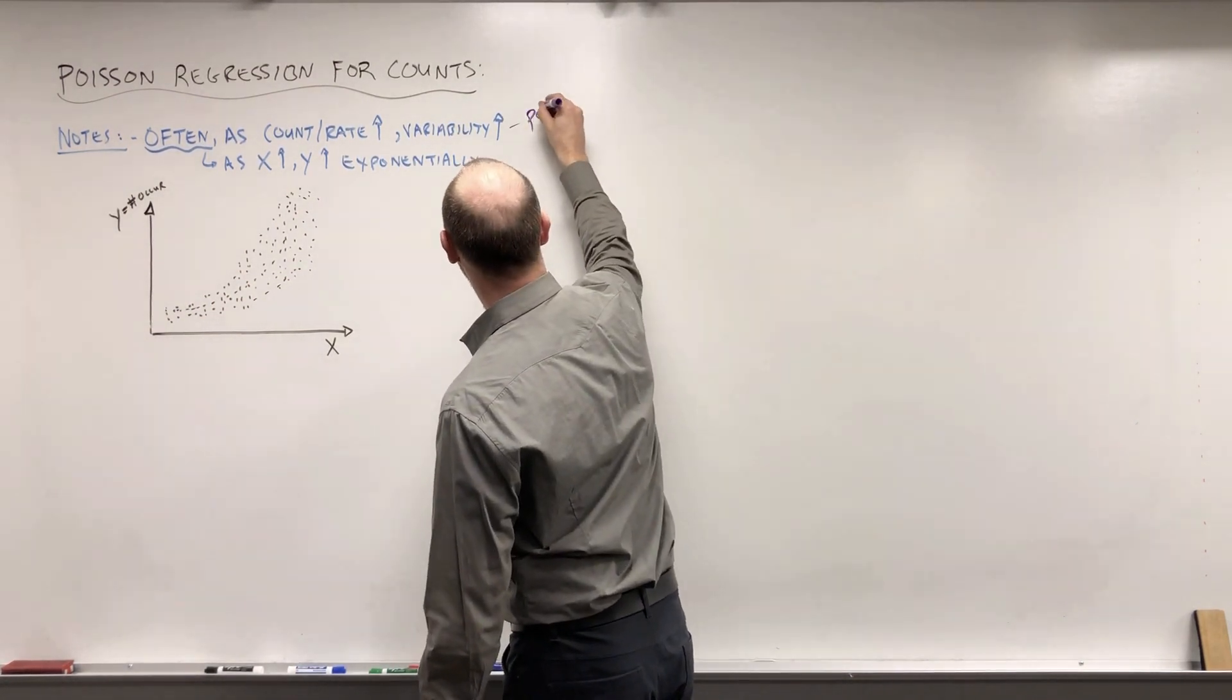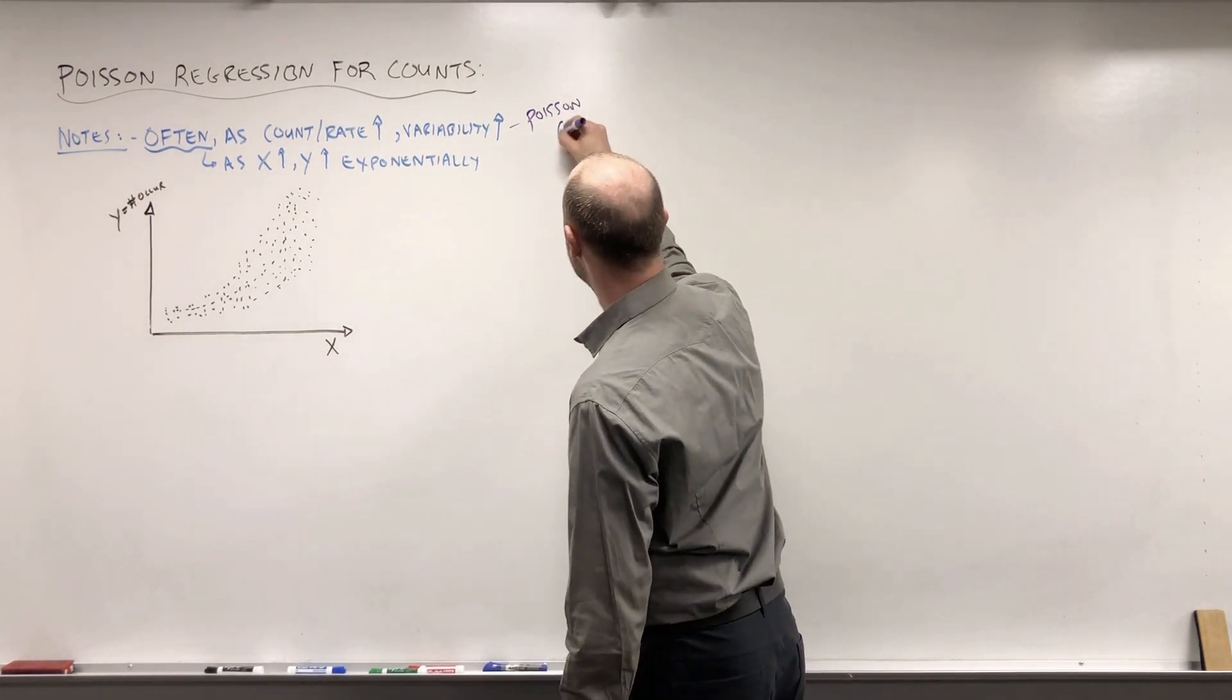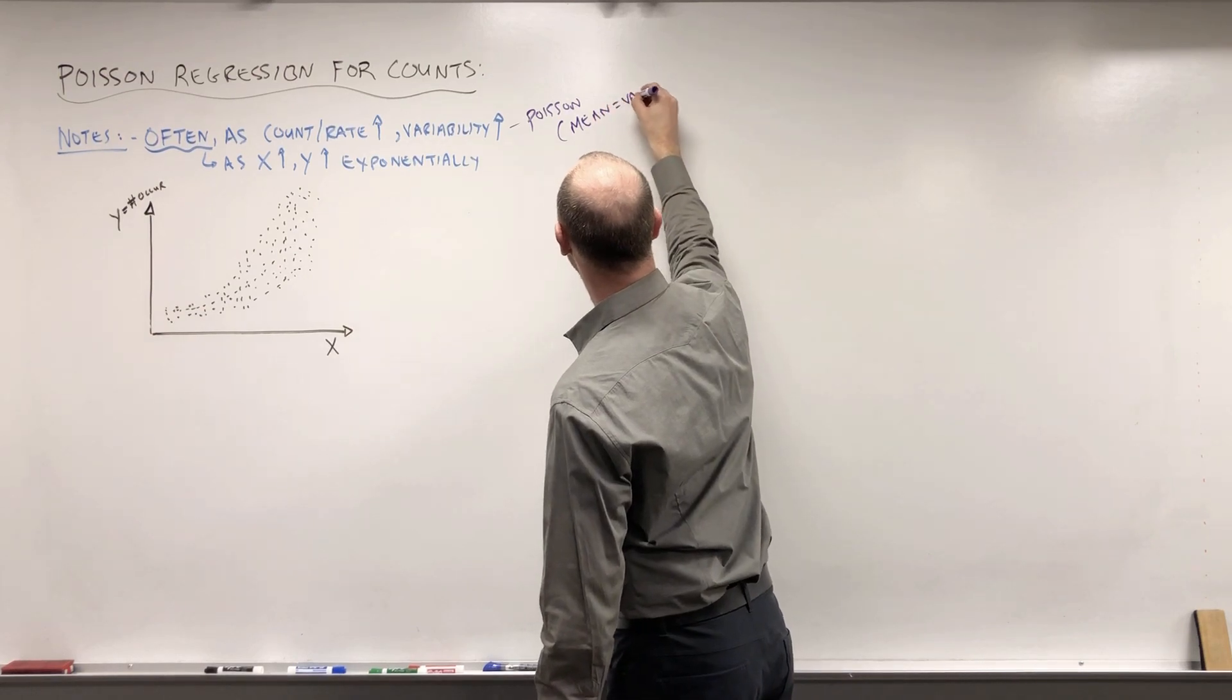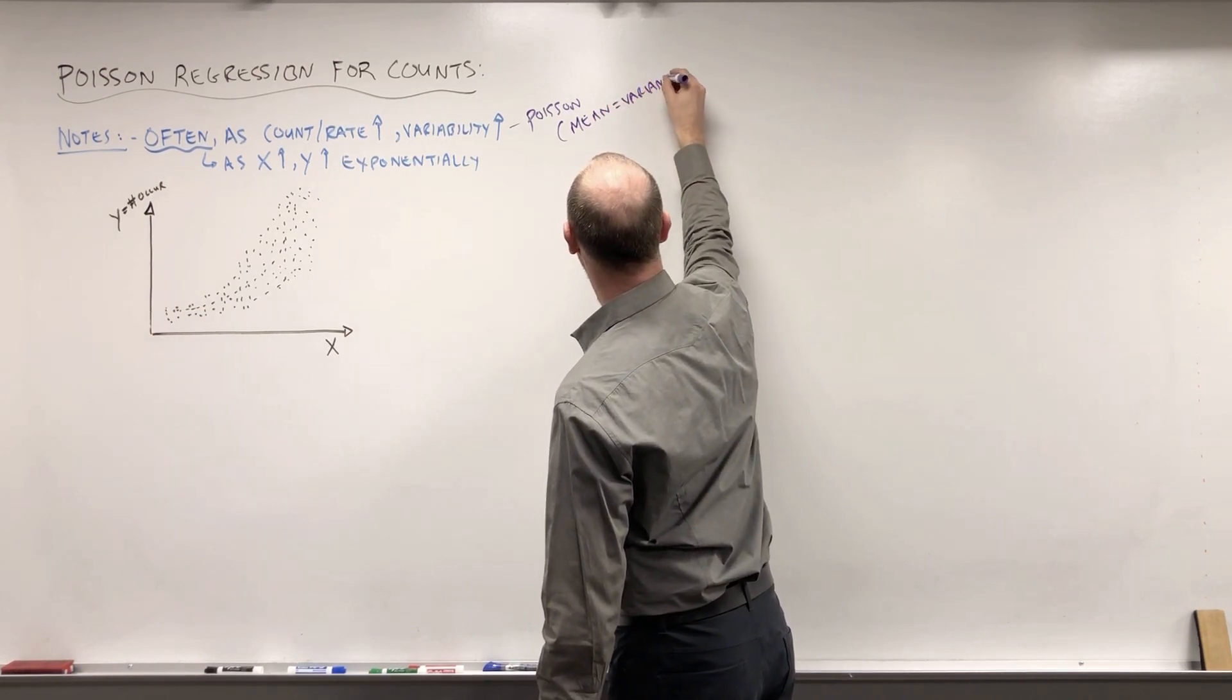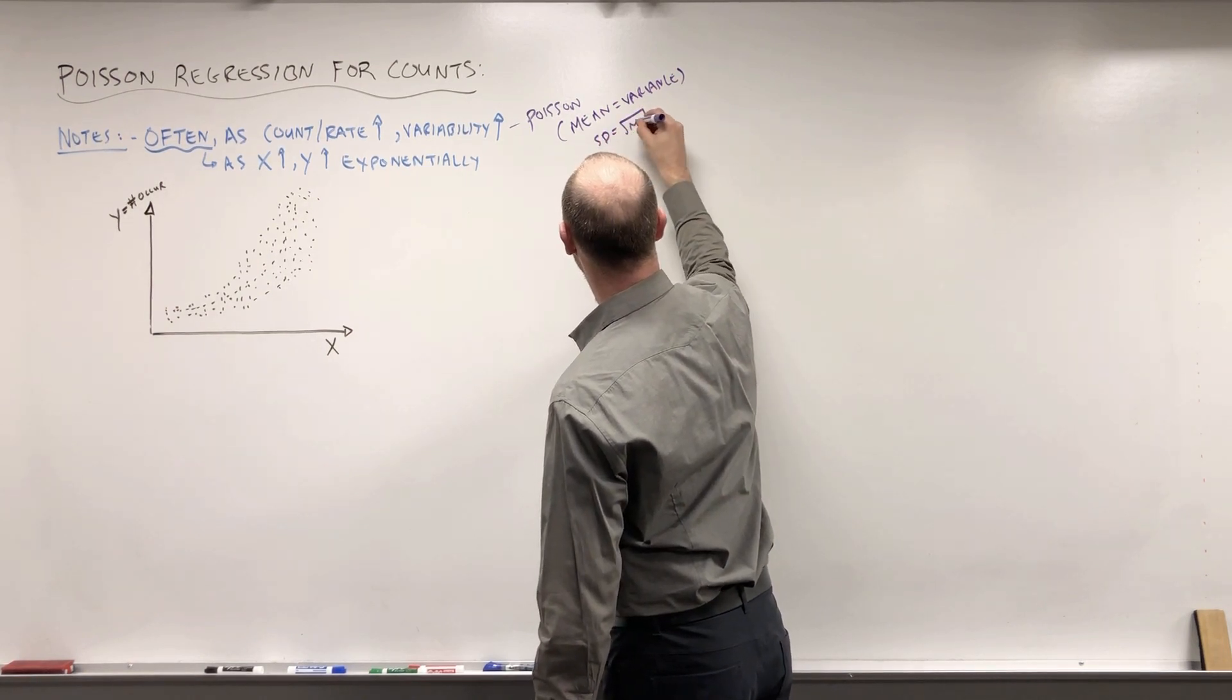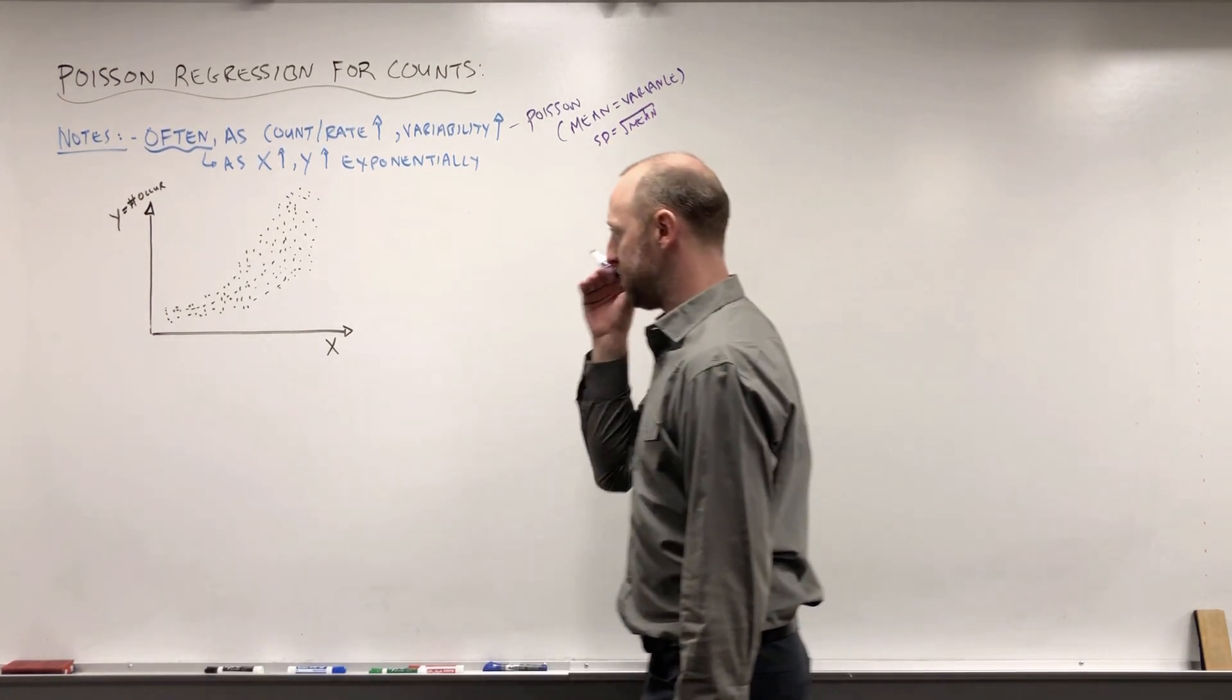And if you remember when talking about the Poisson distribution, we saw there a feature it has is that the mean is equal to the variance, or that the standard deviation is the square root of the mean.